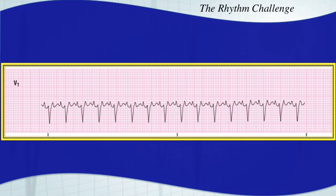This is a more difficult arrhythmia to identify. This one is another 2-to-1 atrial flutter. It looks much different than that last one. This one has a P wave just before the QRS complex and just after, all the way throughout. In fact, it's called an F-wave — flutter wave.